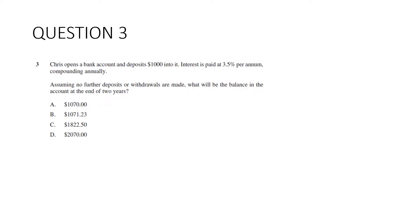Question 3. Chris opens a bank account and deposits $1,000 into it. Interest is paid at 3.5% per annum compounding annually. Assuming no further deposits or withdrawals are made, what will be the balance in the account at the end of two years? Most important thing with compound interest is to look for how often it's compounded. Which is nice, it's annual. So we don't need to divide by 12 to get monthly or divide by 4 to get quarterly. It's just a straight question. Here's our formula. The future value is equal to the present value, which is $1,000. 1 plus r to the power of n.